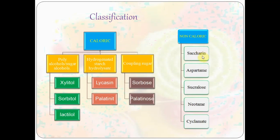In the non-caloric category we have saccharin, aspartame, sucralose, neotame, and cyclamate. In the caloric category we have poly alcohols, hydrogenated starch hydrolysates, and coupling sugars. Under poly alcohols we have xylitol and sorbitol; hydrogenated starch hydrolysates include casein and palatinit; and coupling sugars include sorbose and palatinose.